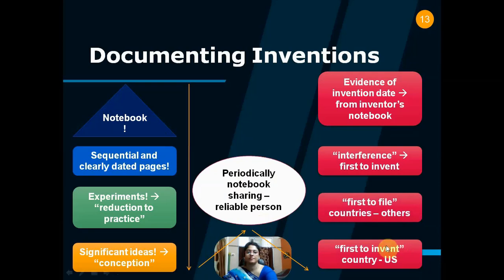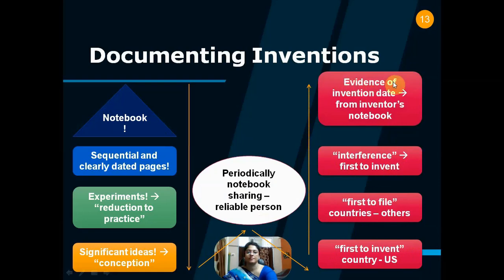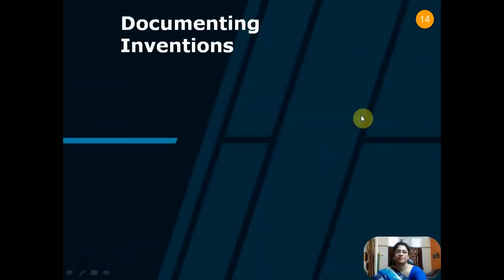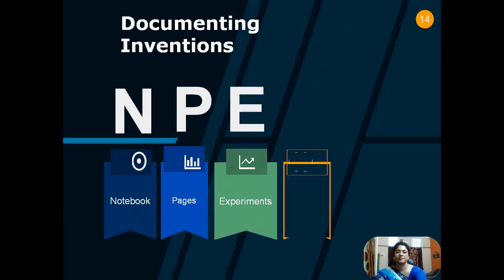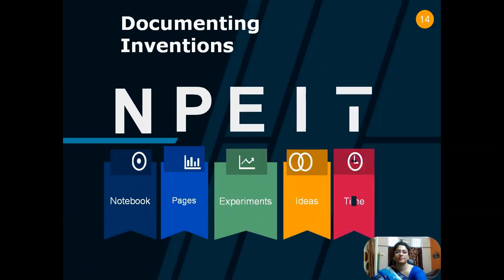The US is the only first-to-invent country; everyone else is first-to-file. Interference is a proceeding to determine who is first to invent. Evidence of invention date is usually from the inventor's notebook. For documenting inventions, we should note down the following terms: Notebook, Pages, Experiments, Ideas, and Timeliness — so NPEIT is a term which should be remembered before documenting inventions.